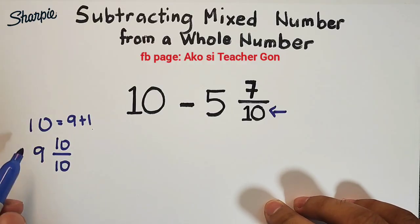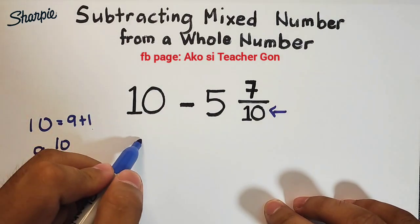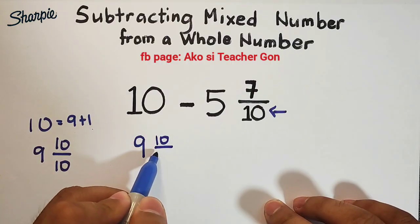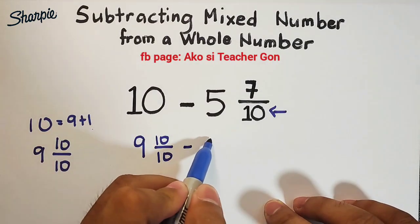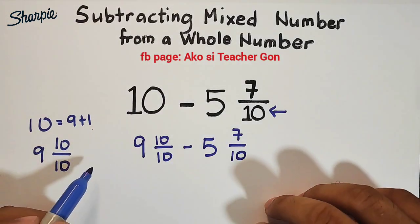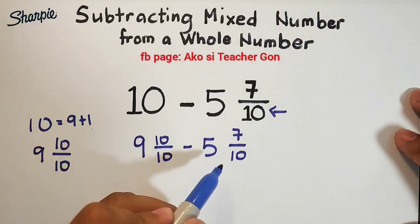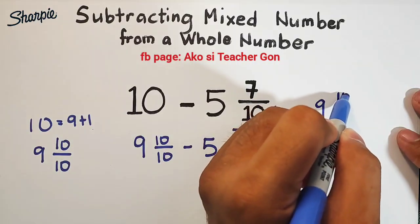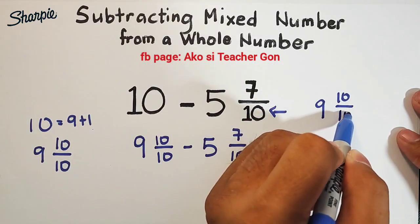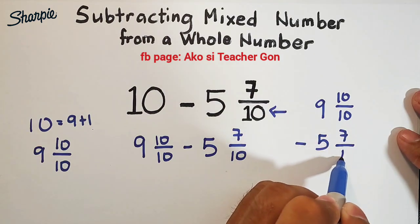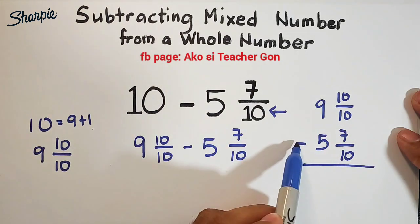So after regrouping we will change 10 into 9 and 10 over 10, copy, minus 5 and 7 over 10. By the way guys, you can do the vertical method on how to subtract this. We can write 9 and 10 over 10 minus 5 and 7 over 10. By subtracting, we will go first with the whole numbers.